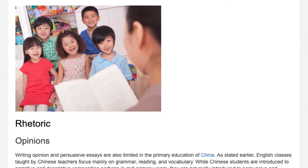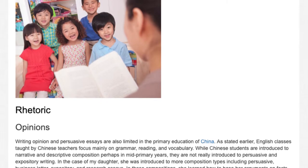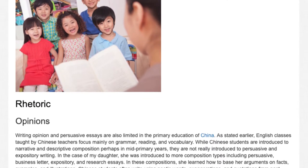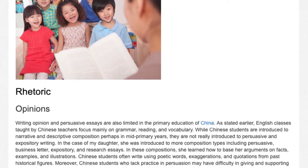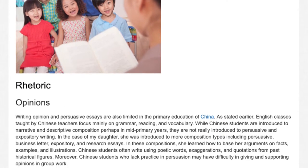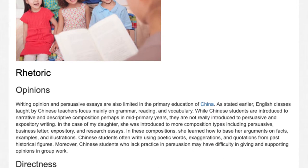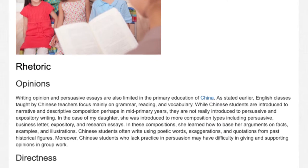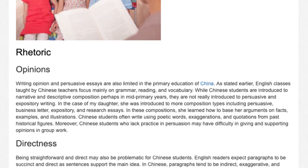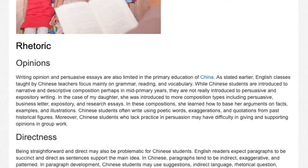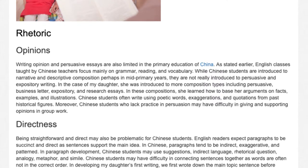Rhetoric: Opinions. Writing opinion and persuasive essays is also limited in the primary education of China. English classes taught by Chinese teachers focus mainly on grammar, reading, and vocabulary. While Chinese students are introduced to narrative and descriptive composition perhaps in mid-primary years, they are not really introduced to persuasive and expository writing. In the case of my daughter, she was introduced to more composition types including persuasive, business letter, expository, and research essays. In these compositions, she learned how to base her arguments on facts, examples, and illustrations. Chinese students often write using poetic words, exaggerations, and quotations from past historical figures. Moreover, Chinese students who lack practice in persuasion may have difficulty in giving and supporting opinions in group work.